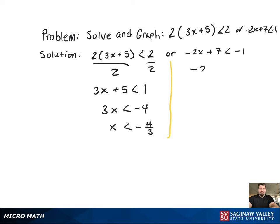Now the right-hand side: just subtract 7, then divide by negative 2. Make sure that you flip the inequality symbol since we're dividing by a negative. And now both sides are solved for.